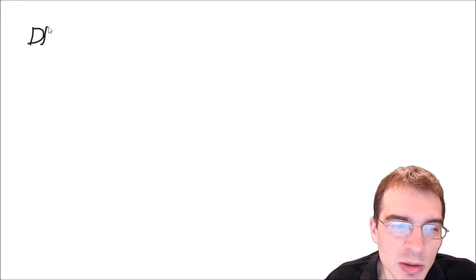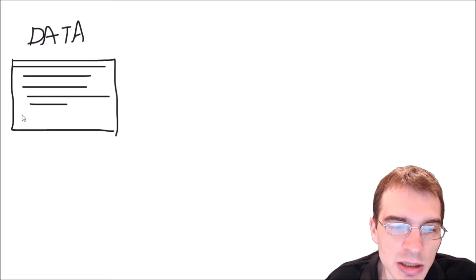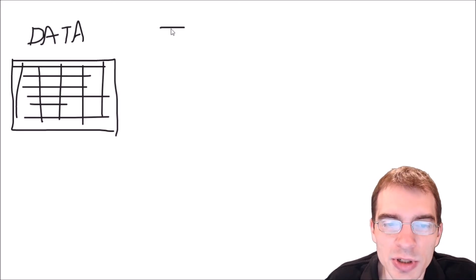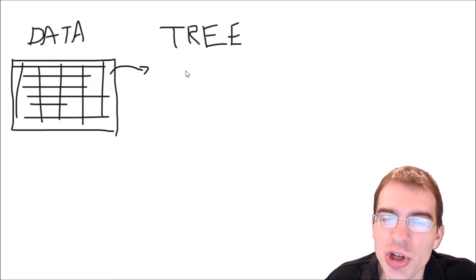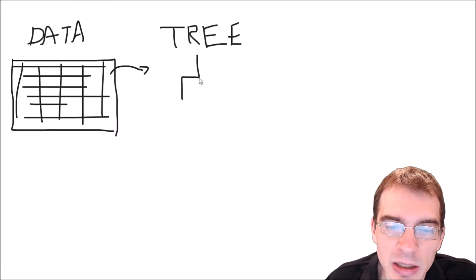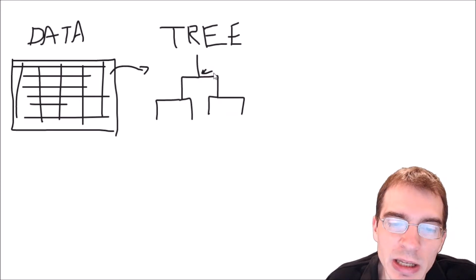With both types of models, you start with some dataset that consists of rows and columns, where the columns are your features or variables and the rows are your observations. A normal decision tree model is going to take every single variable and every single observation and use all of them to generate the best tree that it can, making splits that increase the accuracy of predictions all along the way. The specific method that a decision tree uses to make its decisions varies depending on the type of tree you're making.